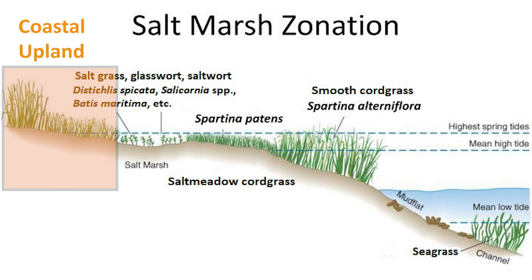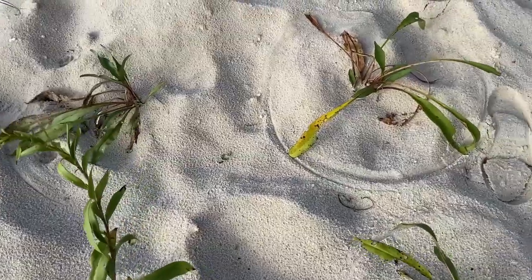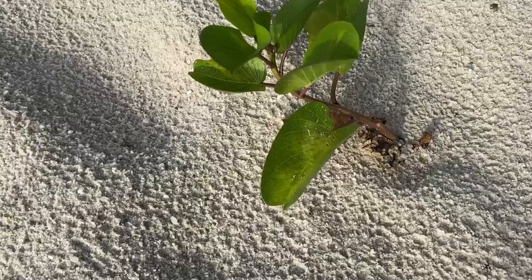The coastal upland zone, sometimes referred to as high marsh, includes anything landward of the high marsh zone up to the maritime hammock, and is an area that typically would only be flooded during storm surge events. Plants that live in coastal uplands are tolerant of salt spray, but are not tolerant of severe salt stress or water logging. Some examples of plants that thrive in the coastal upland zone are sea oats, dune sunflower, seaside goldenrod, panic grass, sea oxeye, blanket flower, and railroad vine.